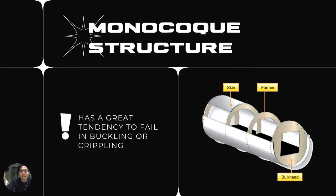The empty container can support a grown man, but push the side in with a pencil with the person standing on it and the can will be compressed in the blink of an eye. This instability necessitates the addition of an internal support structure that resists these failure modes. Such a support structure is generally an assembly of frames, bulkheads, and stringers, as shown in the picture.